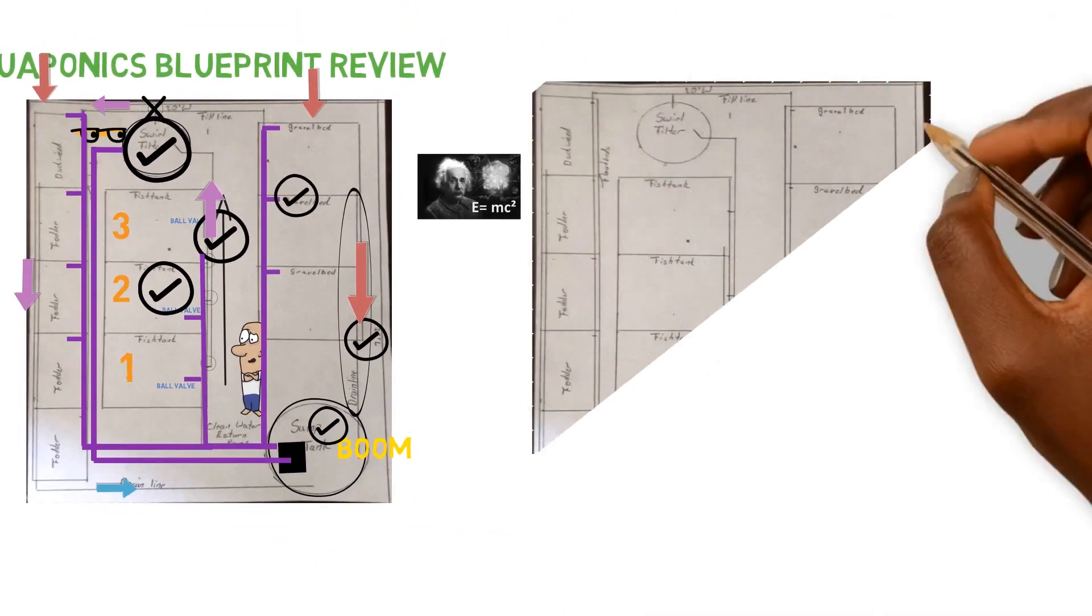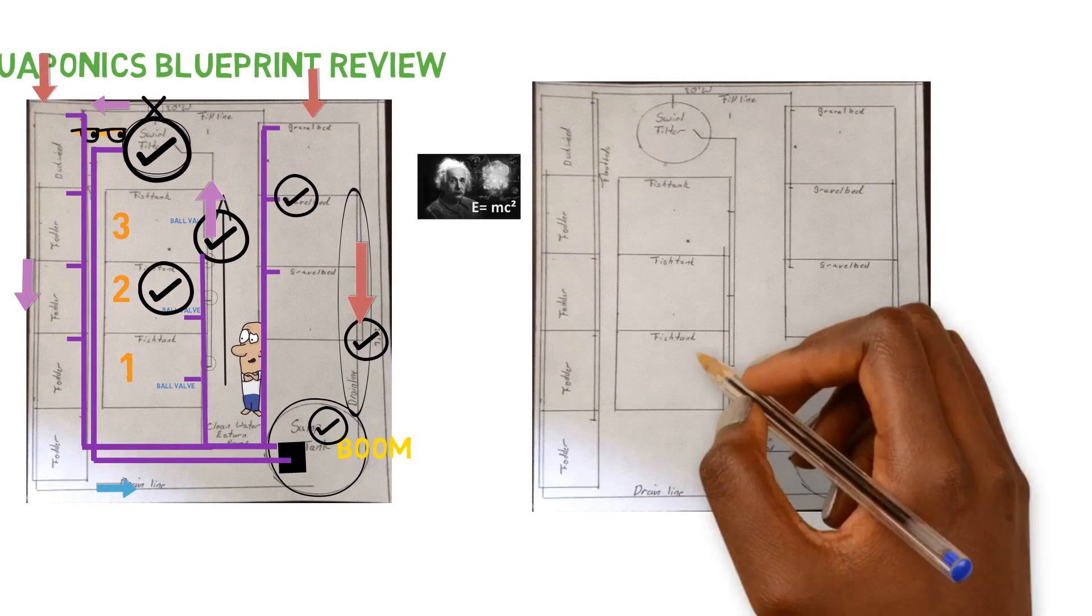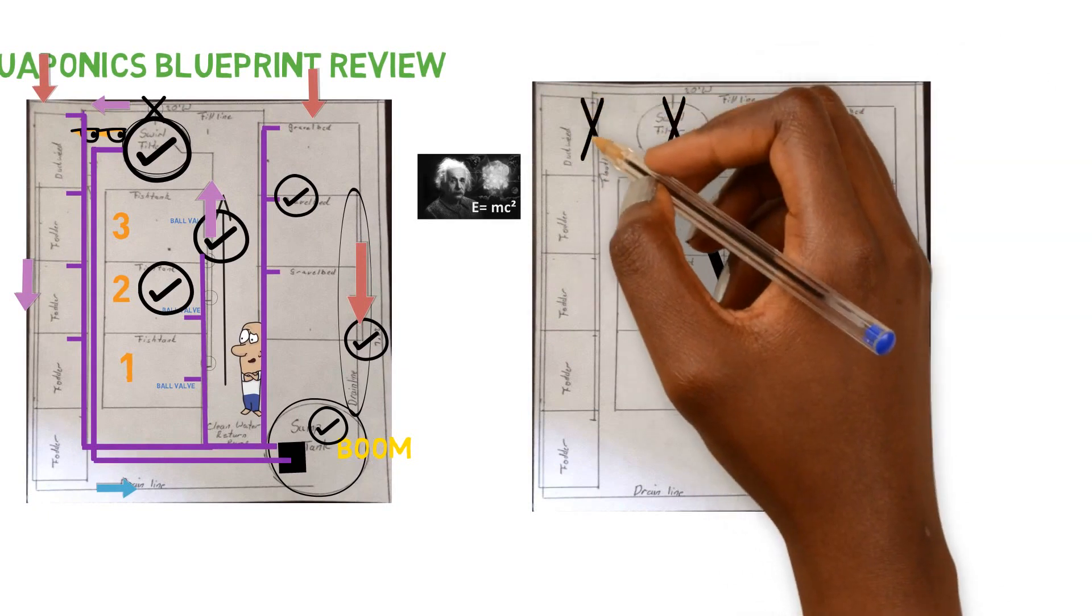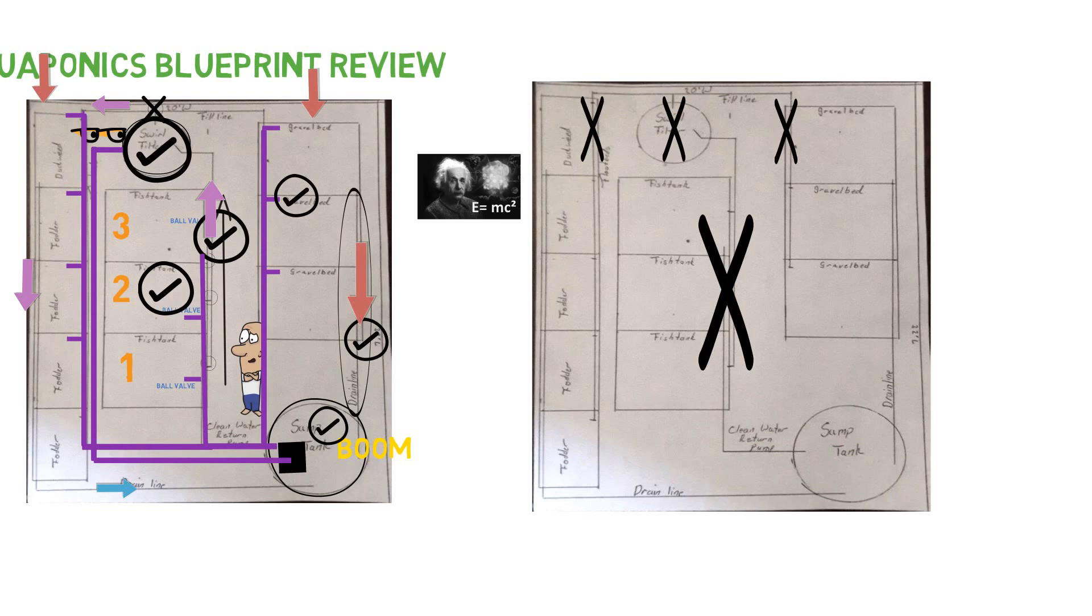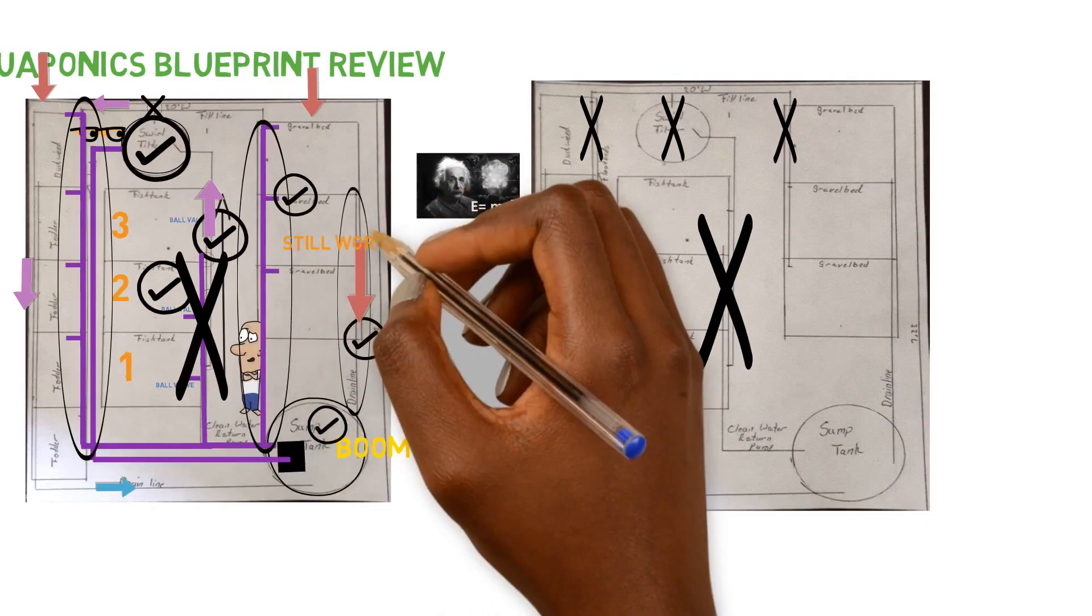But it would allow more control because if something happens here with the fish tanks, guess what? Everything else is out of order. Everything else is out of order. Something happens with these fish tanks and you need to take those offline. The whole system's off where if you had it set up the way I have it set up with the split flow, we take the fish tanks out of the equation,